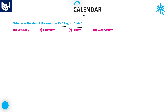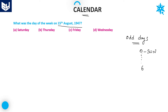First of all, we need to calculate 15th August 1947. Whenever you are solving problems related to calendars, most of the questions are based on odd days. We need to find how many odd days are there in 15th August 1947. If the number of odd days is 0, then that day is Sunday. The number of odd days is always from 0 to 6. The week always starts with Sunday and ends with Saturday.